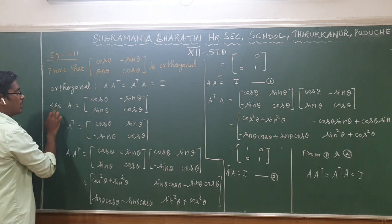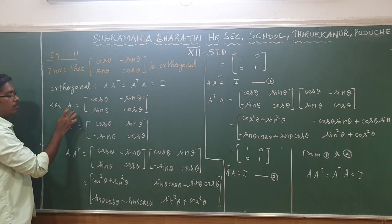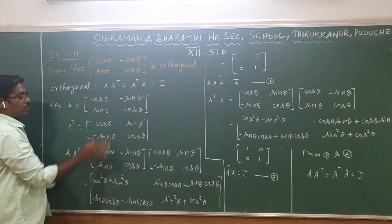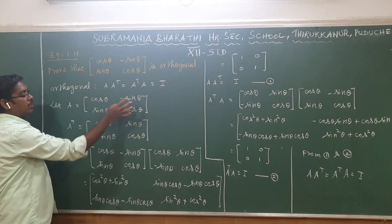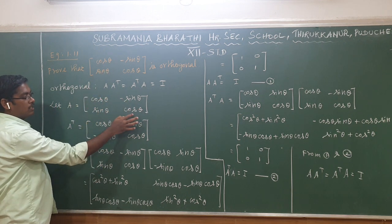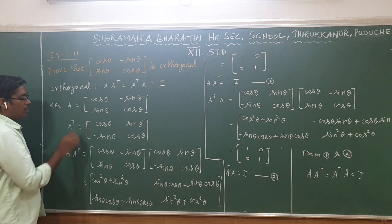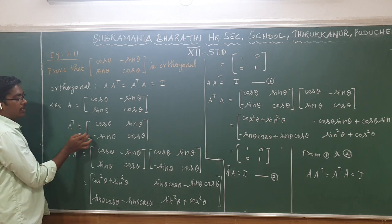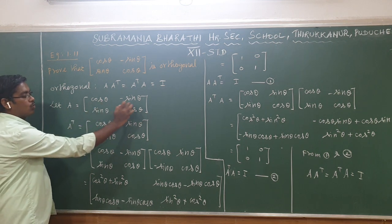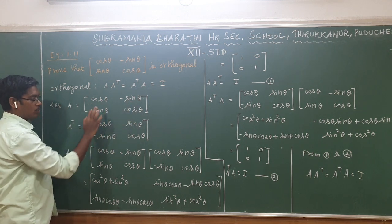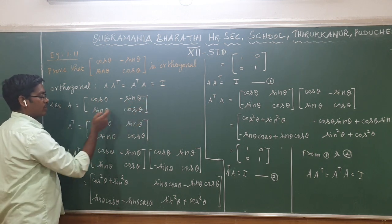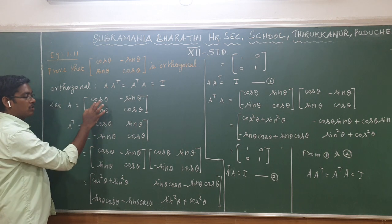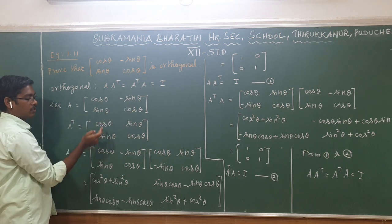Let A be the matrix with first row [cos θ, -sin θ] and second row [sin θ, cos θ]. To find A transpose, we interchange rows and columns. The transpose Aᵀ has first row [cos θ, sin θ].